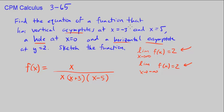We've handled the vertical asymptotes and the hole at x equals 0. Now, how do we get the horizontal asymptote at y equals 2? If we plug in infinity, we get infinity in the numerator and infinity cubed in the denominator — those won't cancel to give 2. Looking at the denominator so far, the highest power is x cubed.